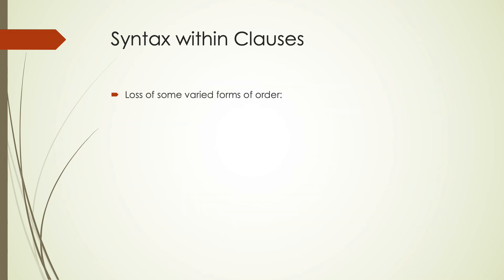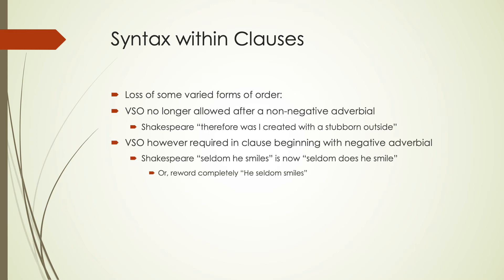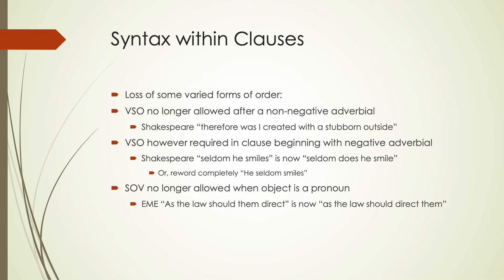As far as clauses, we've lost a lot of the varied forms — subject-verb-object is even more rigid than before. We don't allow verb-subject-object after non-negative elements. In Shakespeare, 'therefore was I created with a stubborn outside' would require 'I was created' in present day. It is required, however, if there is a negative and verb fronting: 'seldom does he smile' rather than 'seldom he smiles,' or we can just say 'he seldom smiles.' Subject-object-verb is also no longer allowed when the object is a pronoun — 'as the law should them direct' must now become 'as the law should direct them.'